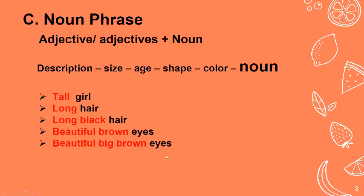Kata sifat dan kata benda tadi kalau kita gabungkan akan membentuk noun phrase — kelompok kata yang ada kata sifatnya, di mana kata sifat ini sebagai pemberi keterangan kata benda atau noun. Adjective letaknya sebelum noun. Adjective-nya boleh lebih dari satu, baru kata benda noun.